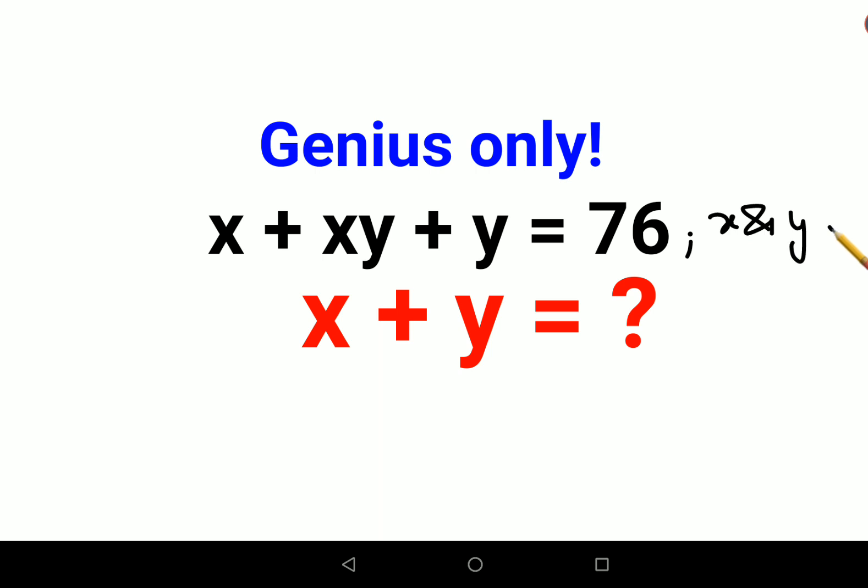Now let's look at what is given to us. Let's write it in the next page. We have x plus xy plus y equals to 76. So now what we can do over here is the first step - we'll take x common, so we'll have x times (1 plus y) plus y equals to 76.